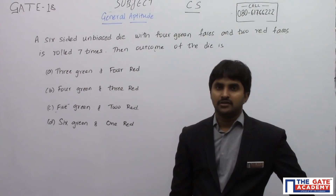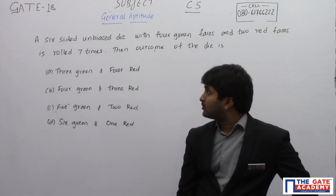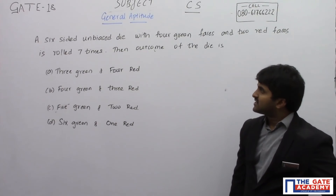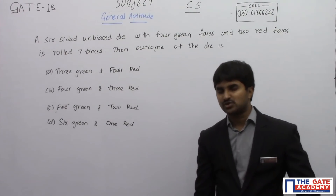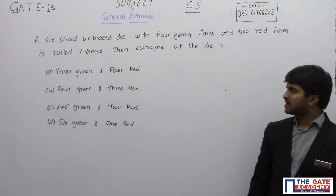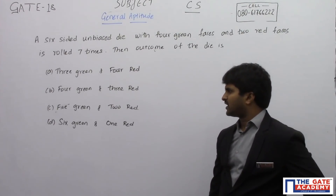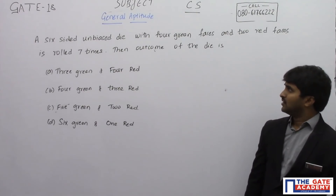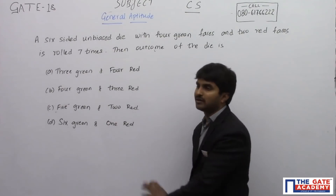Hello students. This question is from general aptitude from the GATE paper of computer science. We have a probability question: a six-sided unbiased die with four green faces and two red faces is rolled seven times. The options for the outcome are: option A three green and four red, option B four green and three red, option C five green and two red, option D six green and one red. When rolling it seven times, what is the expected value of the green and red outcomes?